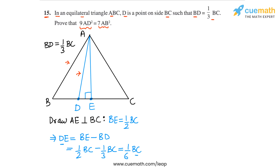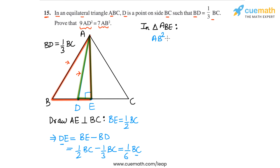Now let's apply the Pythagorean theorem to two triangles in this figure. First, applying it to triangle ABE — let me highlight that triangle. In triangle ABE, AB is the hypotenuse, so AB² equals AE² plus BE².